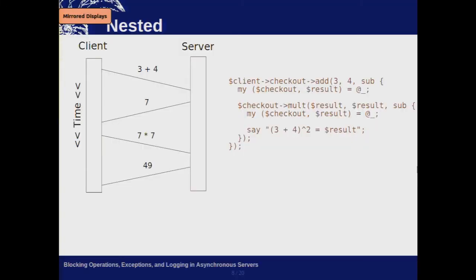Here's how you do two nested operations. I'm adding 3 and 4, the server does the operation, sends the result back to the client, the callback is called, and then I'm doing another operation inside the callback using that same checkout — so it always goes to the same process — basically multiplying those two results together, so 7 times 7. The problem is you now have two round trips to the server: two sequential RPC calls back to back.